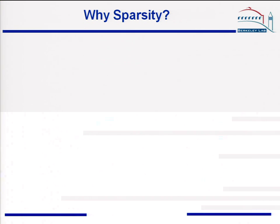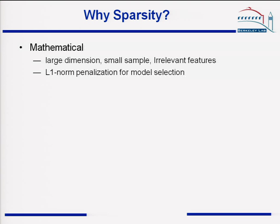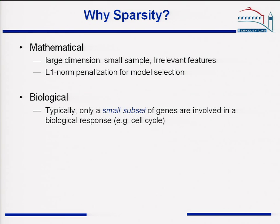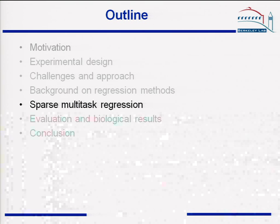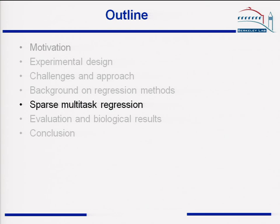Why is sparsity preferred in our problem? From a mathematical point of view, our problem has a very large dimension and small sample size. L1-induced sparsity can remove irrelevant features and give an interpretable model in terms of molecular markers. From a biological point of view, it is typically believed that only a small subset of genes will participate in a certain biological response. Now we have discussed the suitability of sparse regression, and I will propose our sparse multi-task regression.